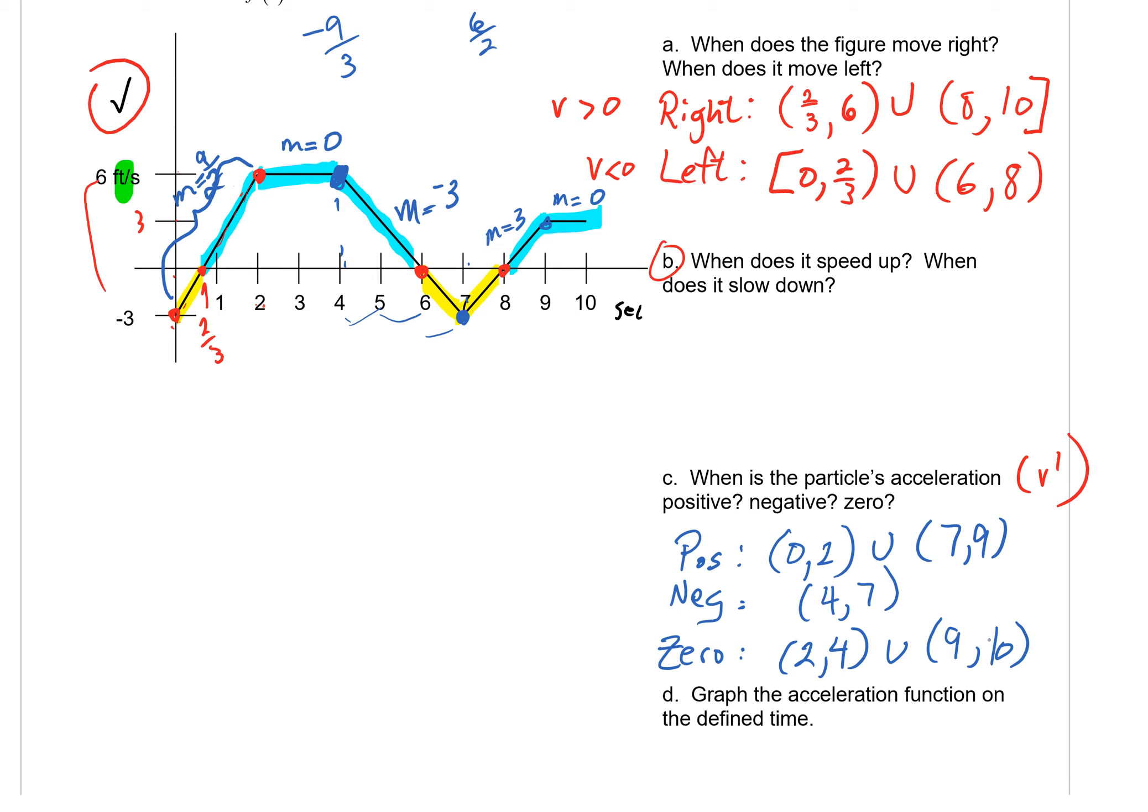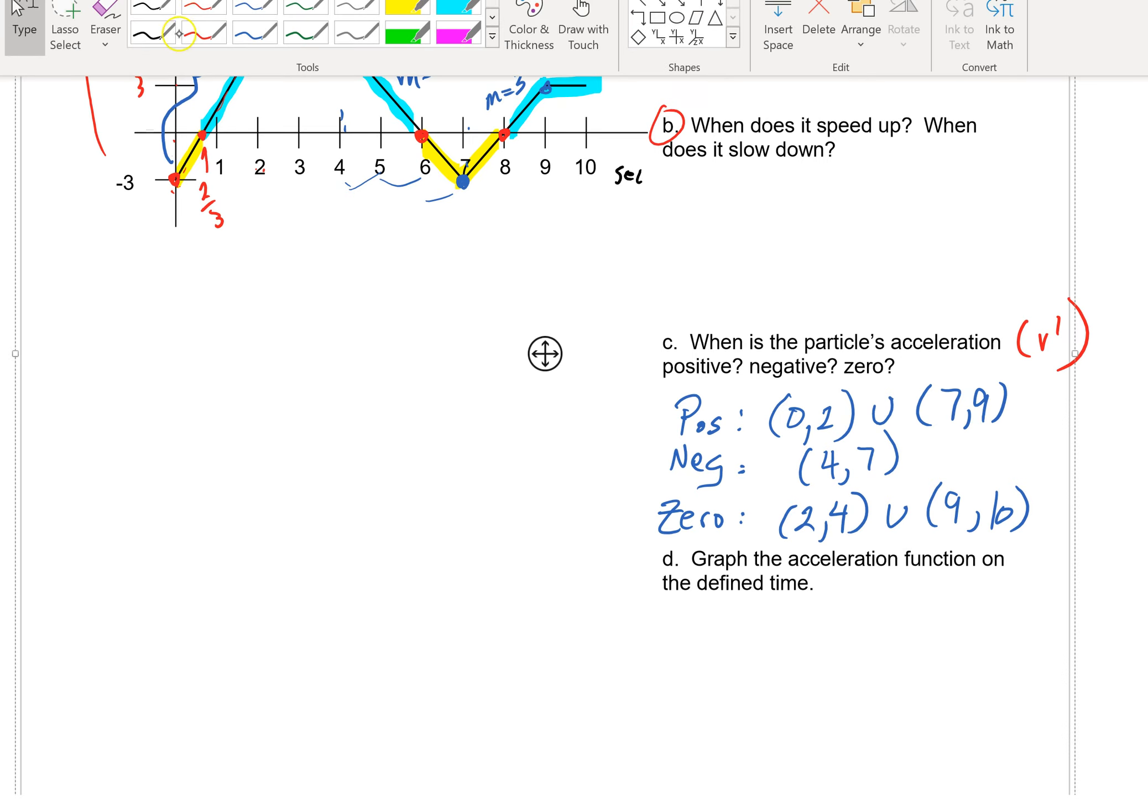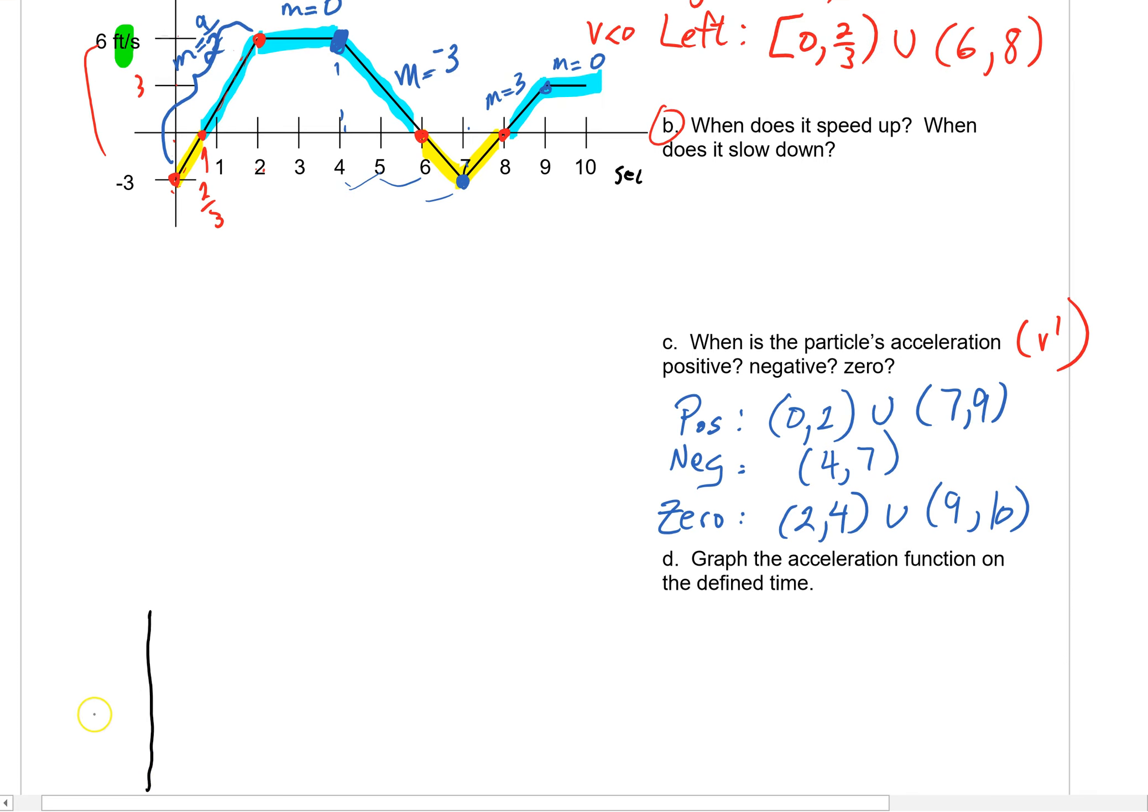We can answer the speeding up and slowing down. But maybe if we look down and just see d here. Graph the acceleration function on the defined time. Yeah I guess I want to do that real quickly too. Acceleration can be negative of course. And you can see that we're going to be going between 0 and 2. Looks like we're going to be going up to a 4. And then over here at a 7. And then up here to 9 and then to 10.